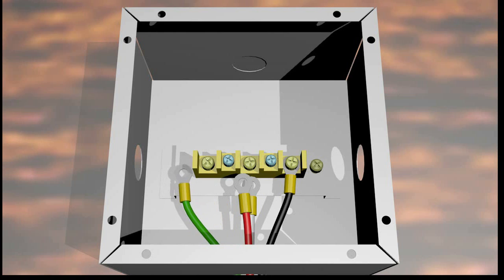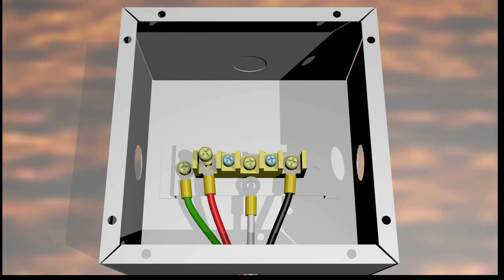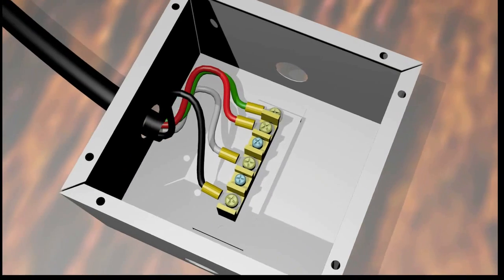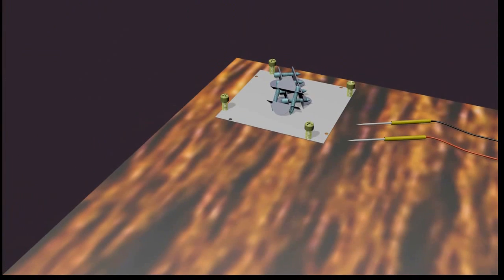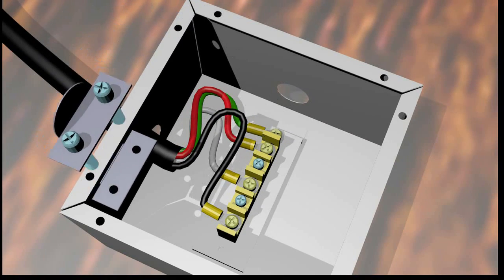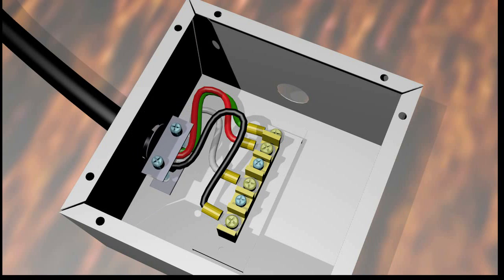Secure the supply and neutral terminals to the terminal block and ground the junction box. A clamp on the cable that is too large to go through the portal prevents strain on the cable from damaging the terminal connections.